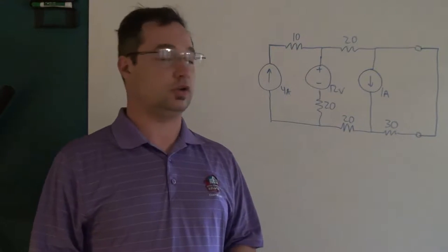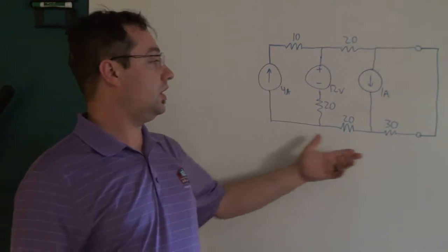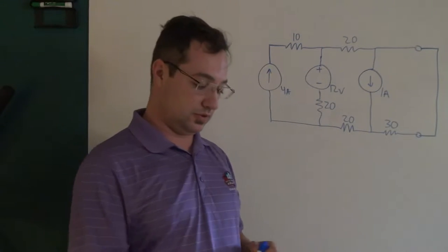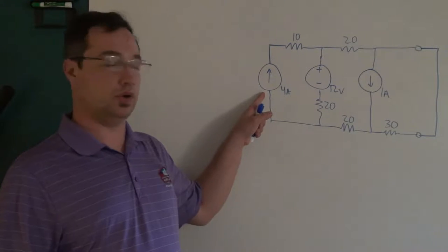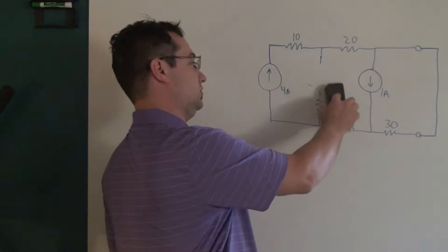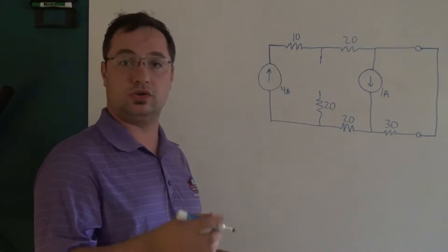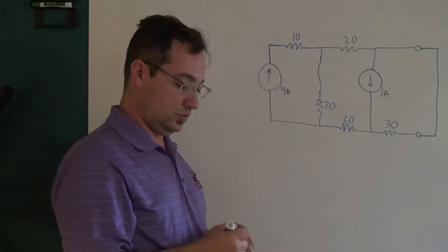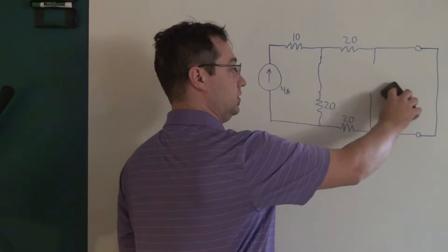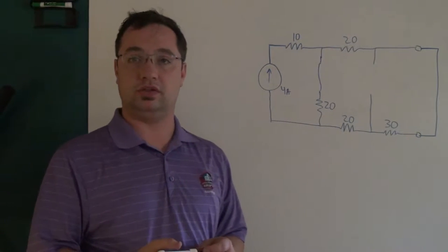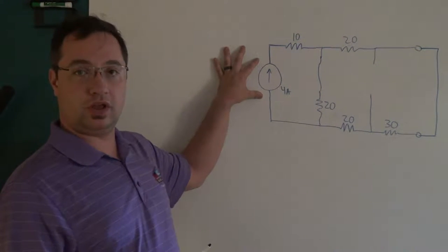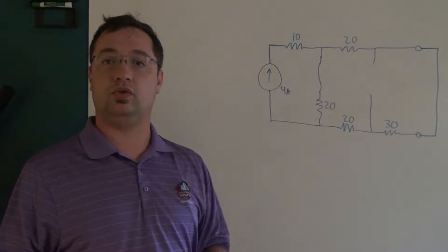Now let's take a quick look at how you would actually calculate the short circuit current. When calculating the short circuit current, you take your output terminals and you short them. The circuit seems quite complicated, but we can simplify solving it with superposition. We'll start with this 4-amp source and shut off the voltage source — when you shut off a voltage source it becomes a short — and we shut off the other current source, which becomes an open. What we're left with is a 4-amp source and a simple voltage divider.